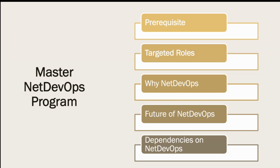I know many of you chose network engineering because you don't want to code or become a software engineer, but eventually we have landed in the same situation where, to do network engineering, we need to know how to code. I completely understand that, coming from a purely network background — where to start, how to start, what to learn, what not to learn. By keeping everything in mind and using my own experience — because I was a purely network guy and I have switched myself from a legacy network engineer to a so-called Net DevOps engineer.